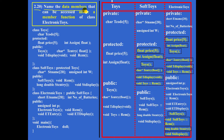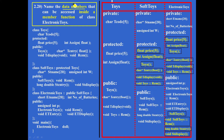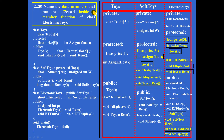Question 2.20: Name the data members that can be accessed inside a member function of class electronic toys. Inside a member function means the whole class is accessible. So all variables of class electronic toys are: 1) short ET name of 20, 2) int number of batteries, 3) float price of 5, and 4) unsigned int DP. All remaining items are functions. These are the four data members.